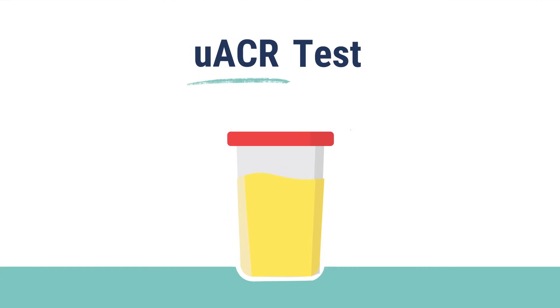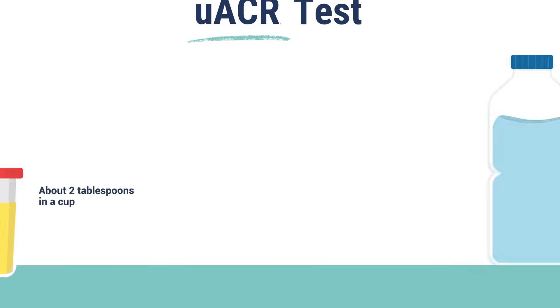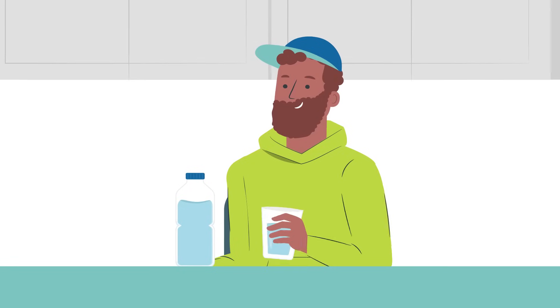The UACR test is a simple urine test. You'll collect a small sample of urine, about two tablespoons in a cup. Remember to drink water before your appointment.